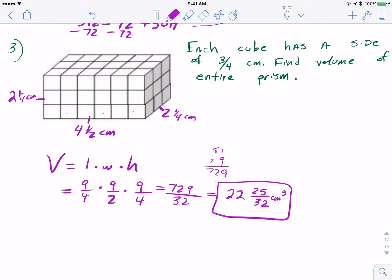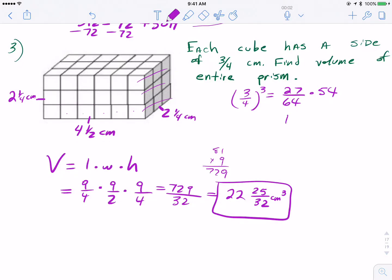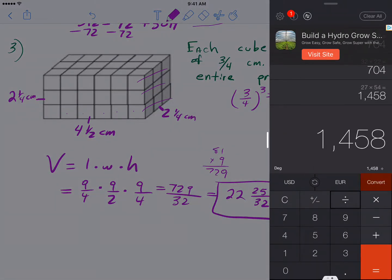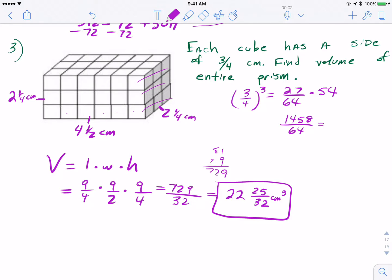Once again, the other way to do this would be to find the volume of each cube, which would be 3 fourths cubed, or 27 over 64. And then the fact that there are 54 I believe cubes in this. Let me just verify that, so each layer has 9, and there's 6 layers deep, so yeah, 54. Doing that multiplication, you're going to arrive at the same answer, 27 times 54, 1458, and dividing that by 64, we get the same answer we had, the 22 and the 25 over 32. Messy fraction, but okay.